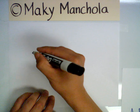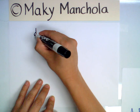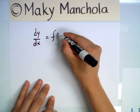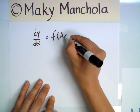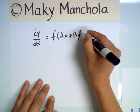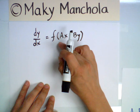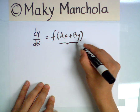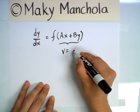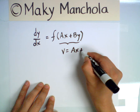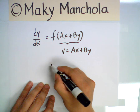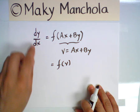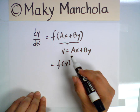Let's start with our differential equation: dy/dx equals f of ax plus by. Our substitution is v equals ax plus by. Immediately the right-hand side becomes f of v. Now, what does the left-hand side become? What is dy/dx in terms of v?